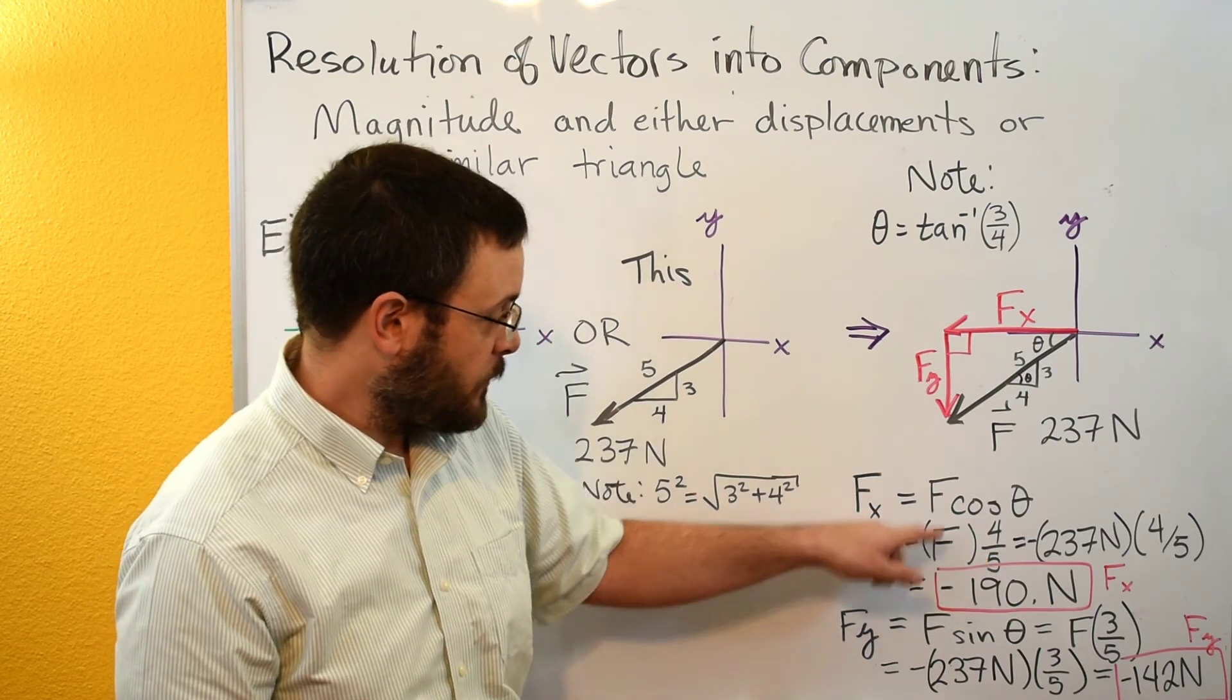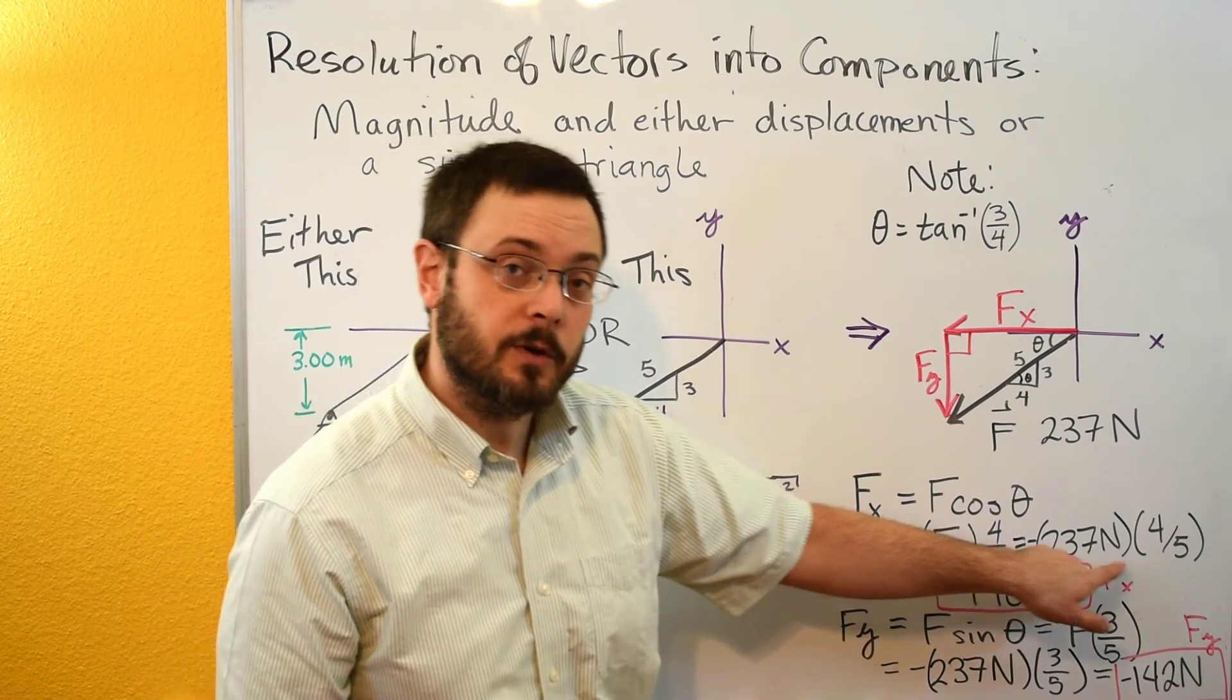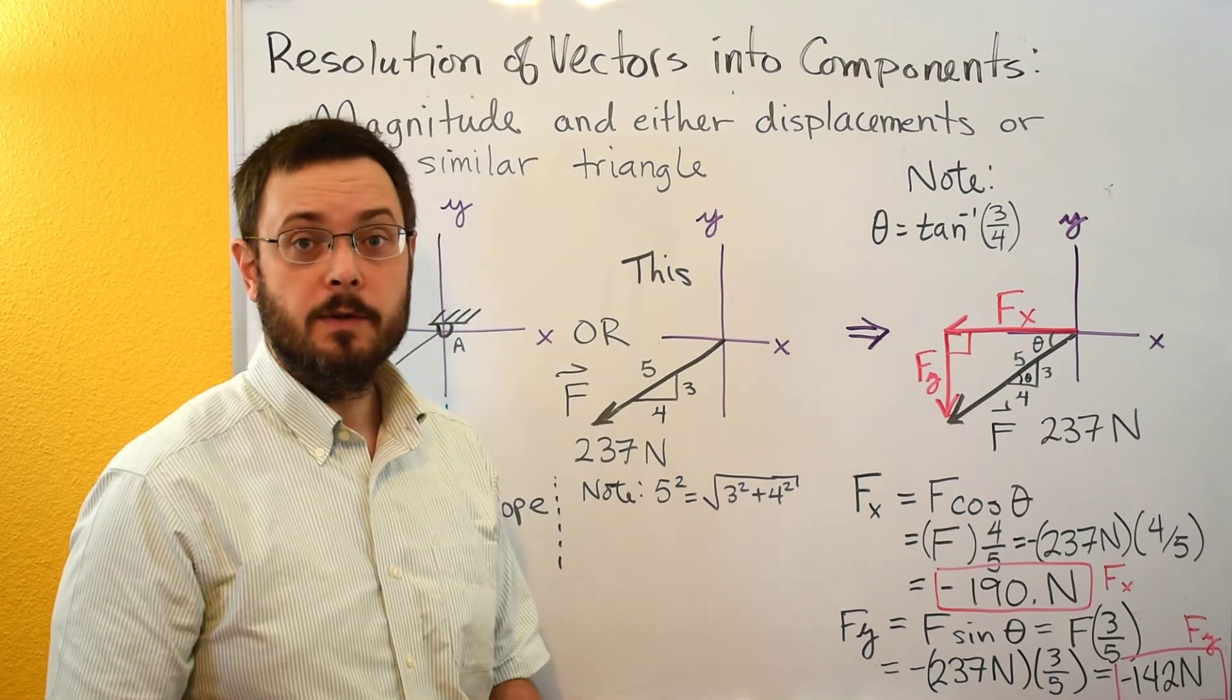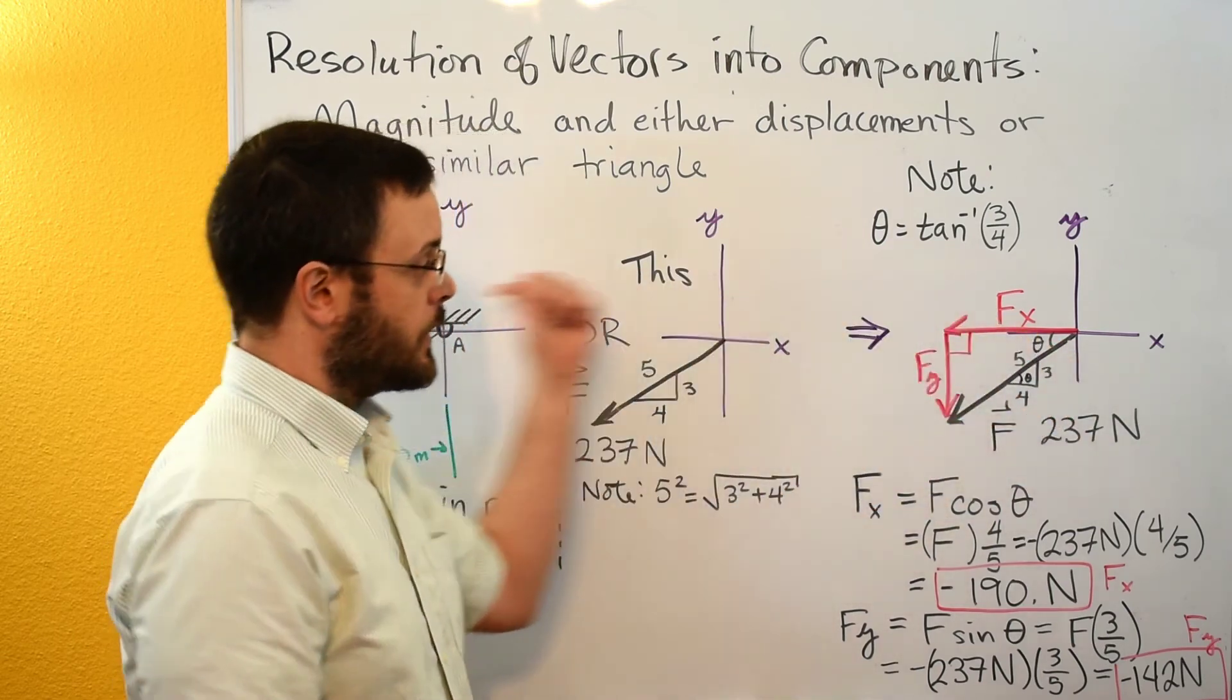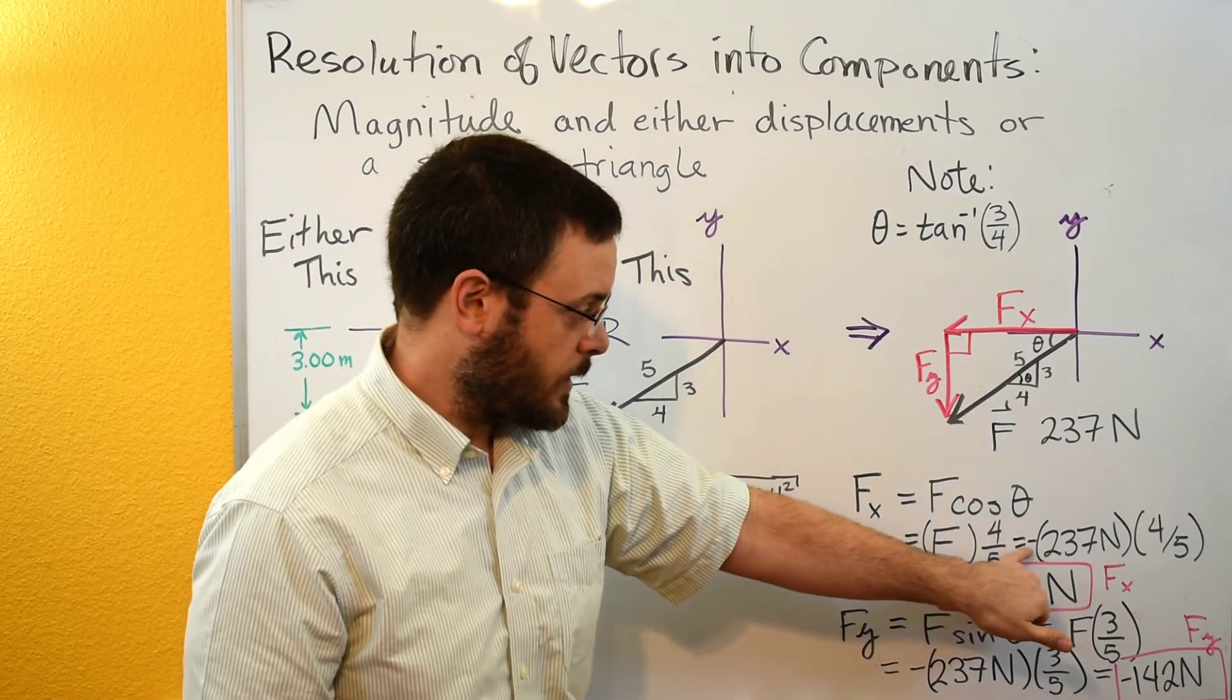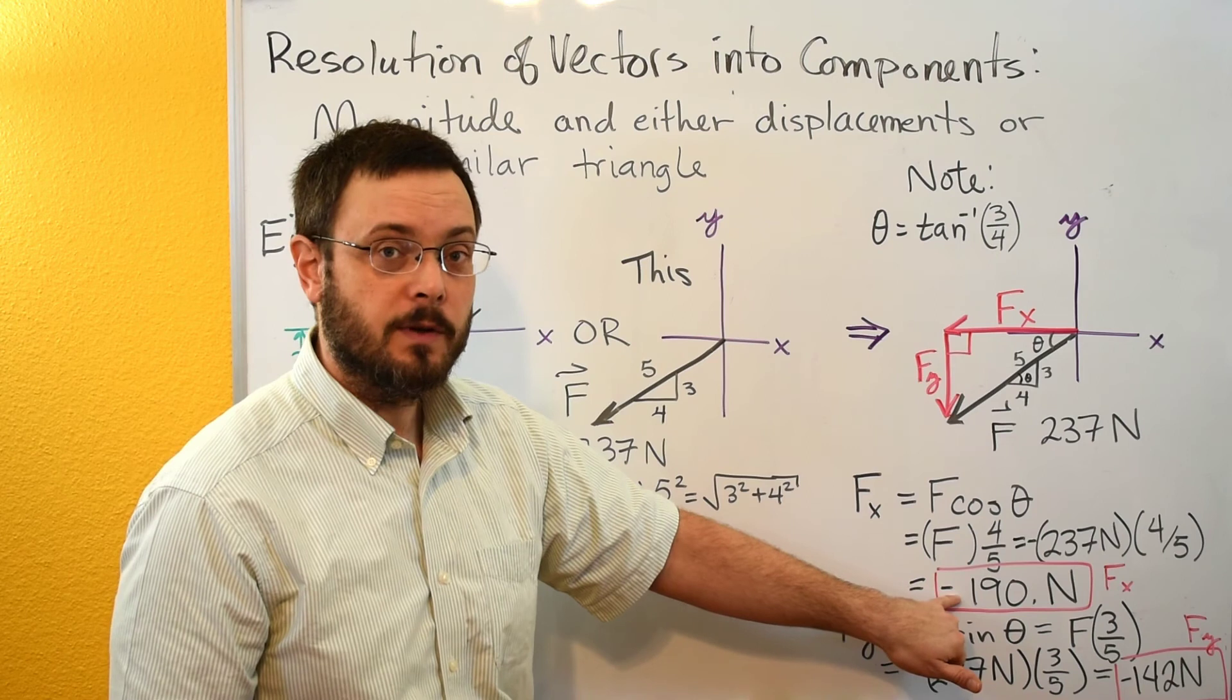So this would be f, f is 237 newtons, so we plug that in. So fx is 237 newtons times 4 fifths. Now we need to do the same thing that we did in the other two videos and check for direction. So x is going in this direction to the left, and so f of x is negative, so we've got to go back and put that negative sign in here, and then our fx value is negative.